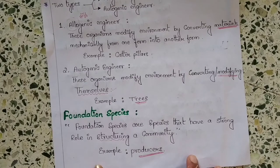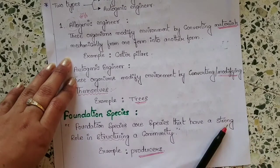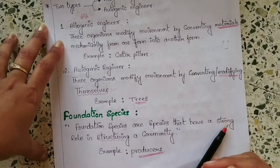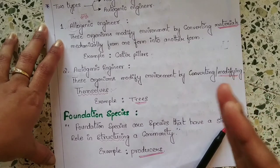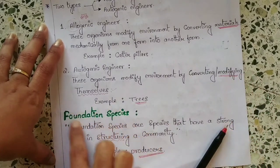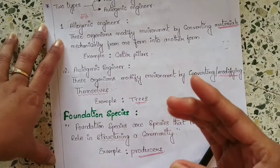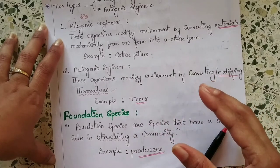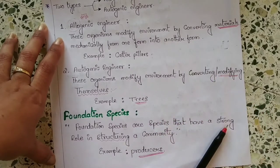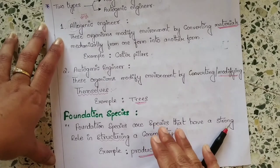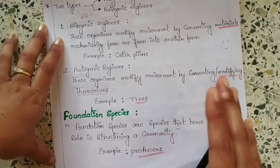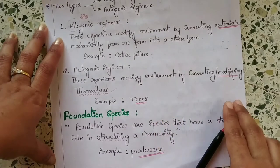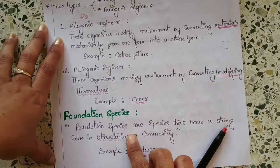One more point to add here: keystone species do not form the ecosystem but they help keep it going, whereas foundation species provide the foundation of a habitat. Keystone species do not form the ecosystem but they help it keep going, whereas a foundation species provides the foundation of a habitat.